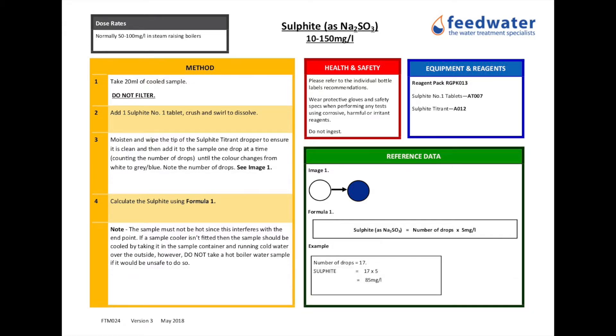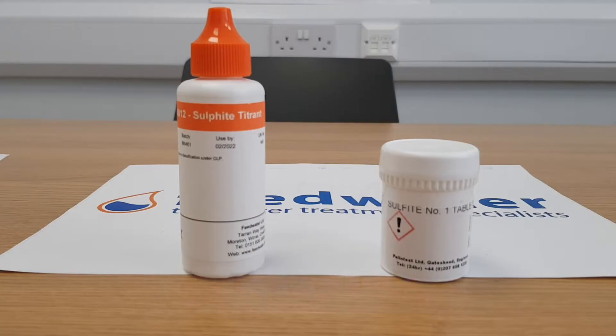Sulfite performs the vital task of oxygen scavenging, meaning it will remove dissolved oxygen from the water. This is important as any dissolved oxygen can lead to corrosion issues within your boiler.